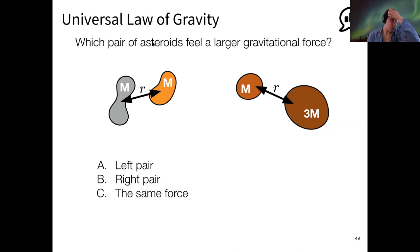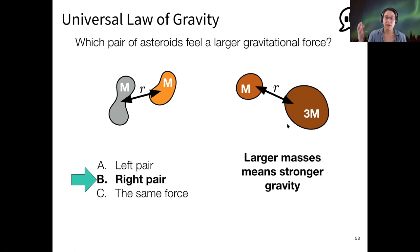Which pair of asteroids do you suppose feels a larger gravitational force? I see the most votes for B, the right pair has the larger force. That's exactly right. The distance between the objects is the same, but the right pair has a larger combined mass than the left pair. When you have more mass in the system, that means stronger gravity in the system. There's more force between these pair of asteroids than this pair.